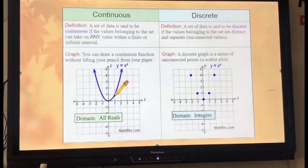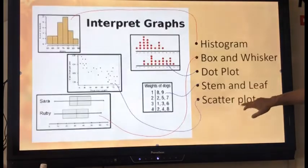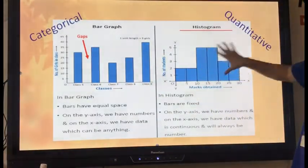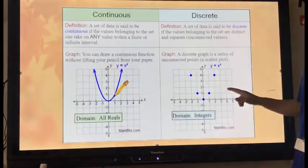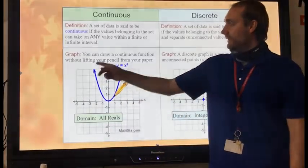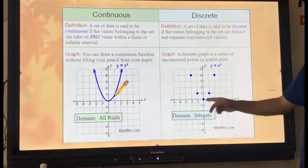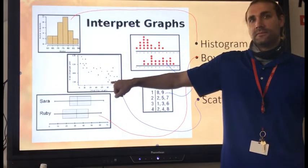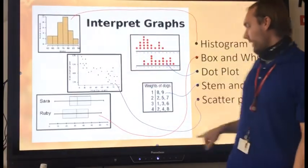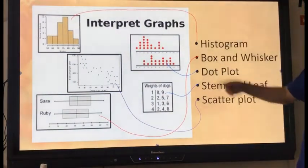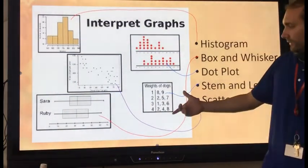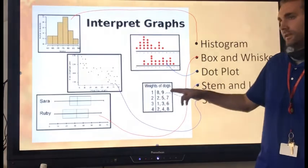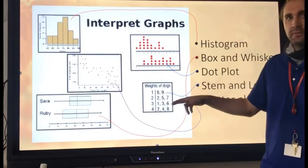So with graphs, we have continuous data and discrete data. Notice with bar graph, discrete, right? Different sections and histograms are continuous. It's all connected. Likewise with graphing, continuous. It's all one line. Discrete. Plot points. Continuous or discrete? Discrete. Plot points. Scatter plot. Basically, they have plot in the name. Well, beside that one. That's misleading. This one, continuous or discrete? Discrete. Because it's 18, 19, then you jump to 22, 25.